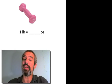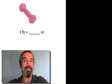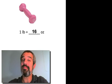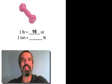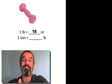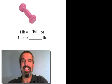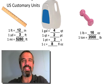Let's switch to weight. A pound equals how many ounces — not fluid ounces, but weight ounces? A baby weighs seven pounds four ounces; how many more ounces before it reaches the next pound? Sixteen. And a ton equals how many pounds? Two thousand.